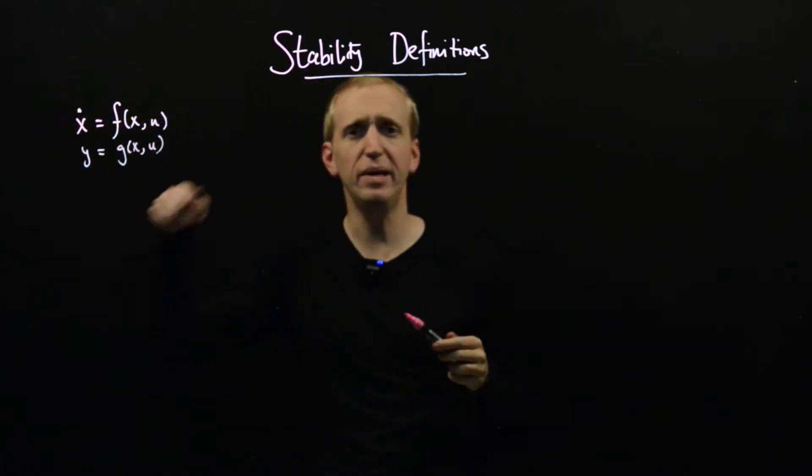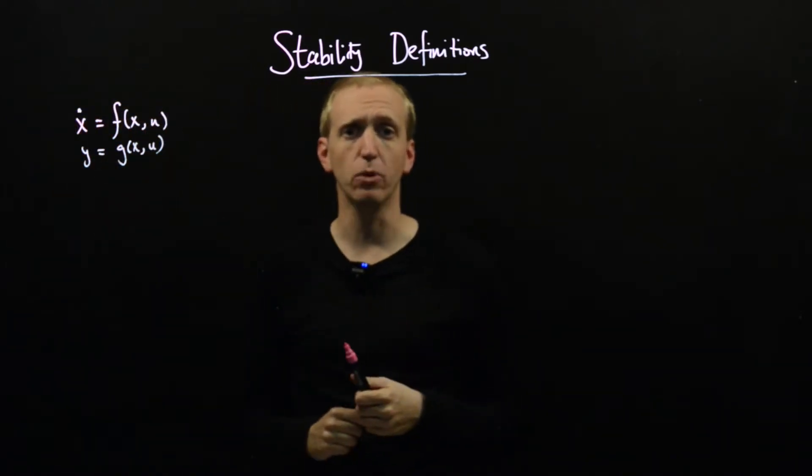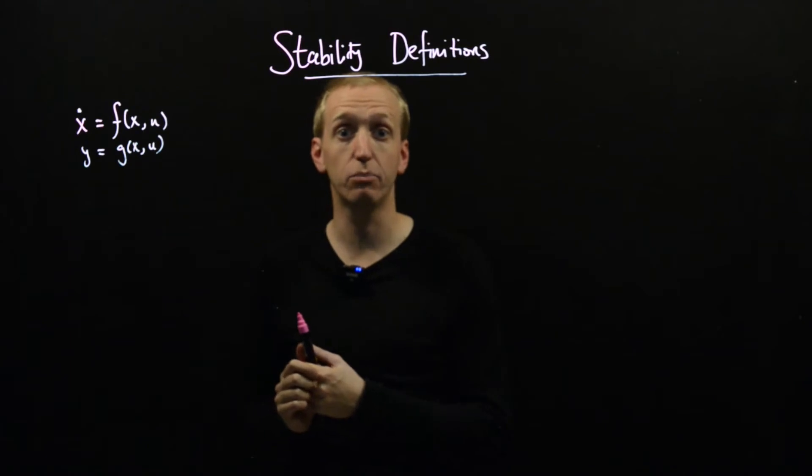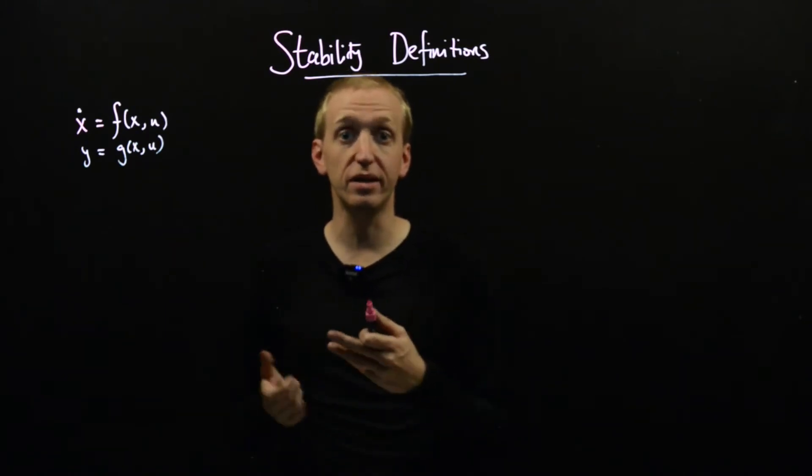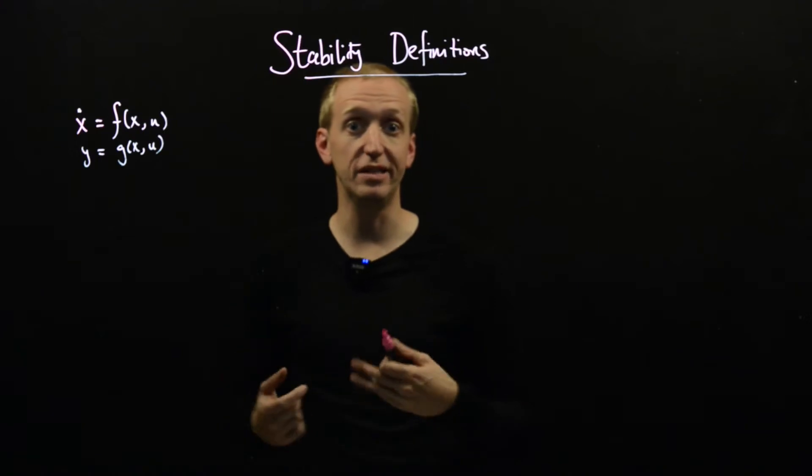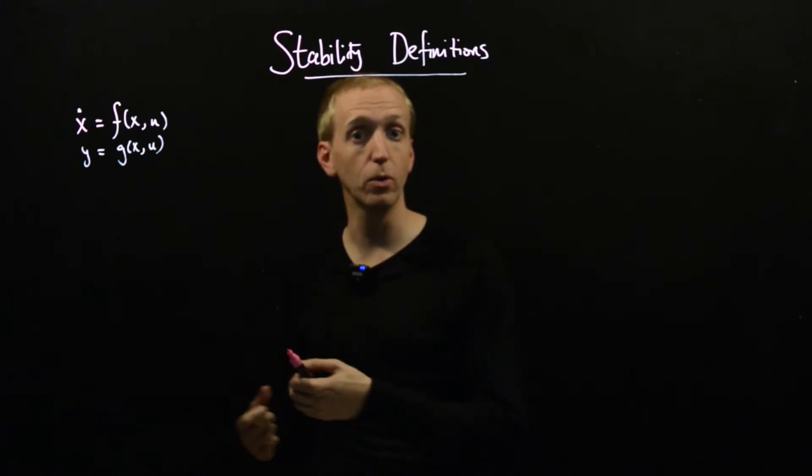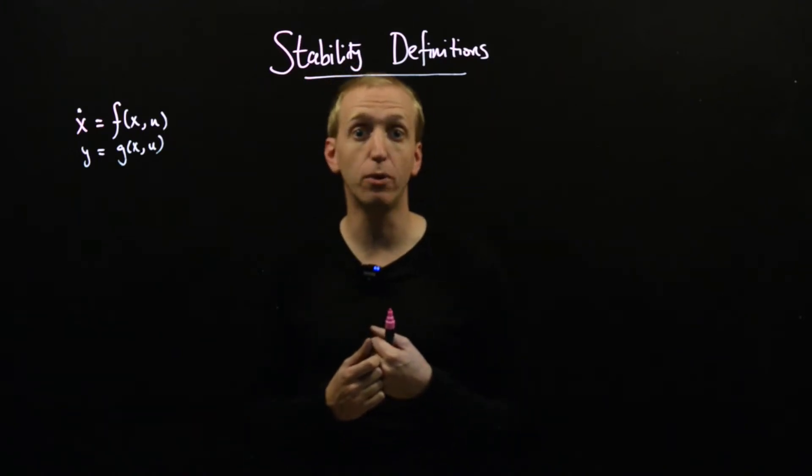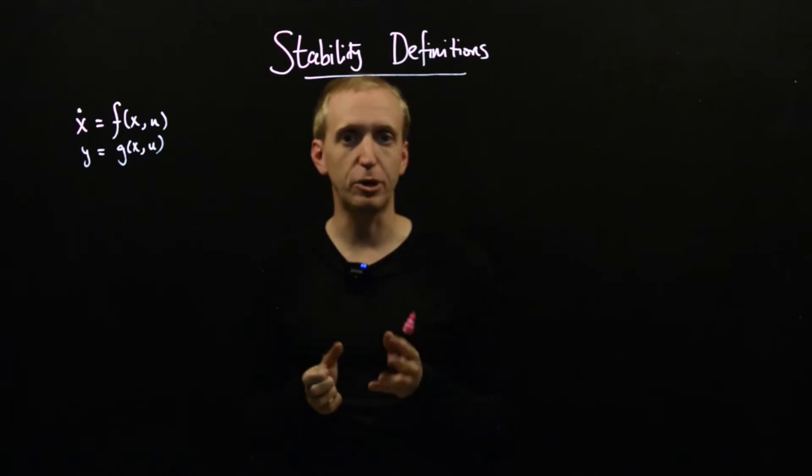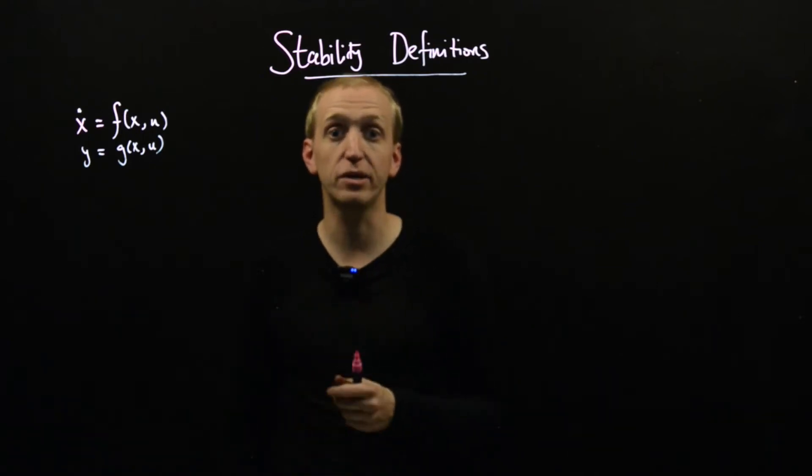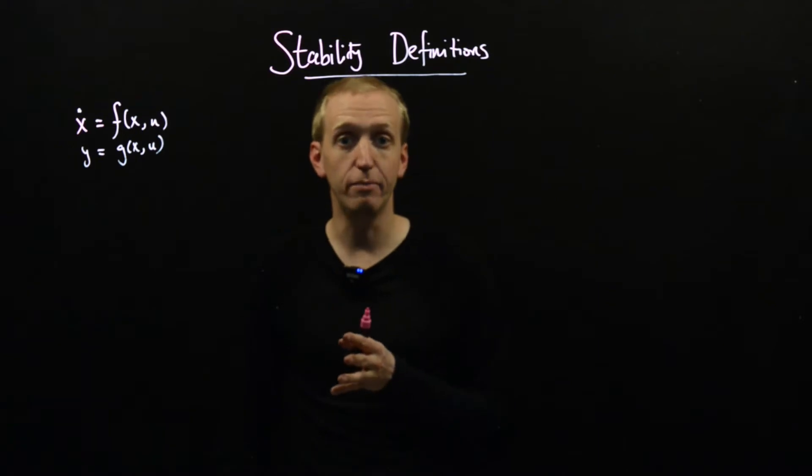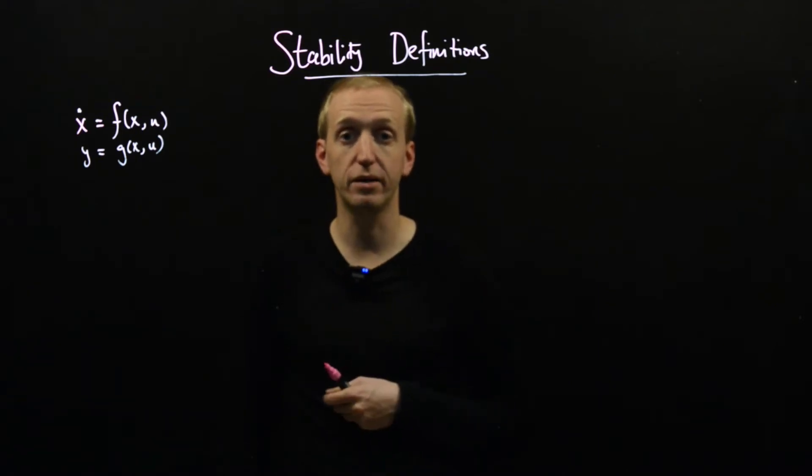What does it mean for this system to be stable when you're near to an equilibrium? We've already seen some clues that a slightly more sophisticated stability definition will be required than normal. When we were studying phase portraits, remember those annoying special cases where our linearization, the A matrix in our linearization had imaginary eigenvalues.